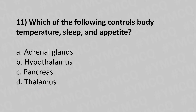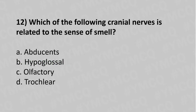Now let's move to question number eleven: Which of the following controls the body's temperature, sleep, and appetite? Option A: adrenal glands. Option B: hypothalamus. Option C: pancreas. Option D: thalamus. The answer is Option B: hypothalamus.